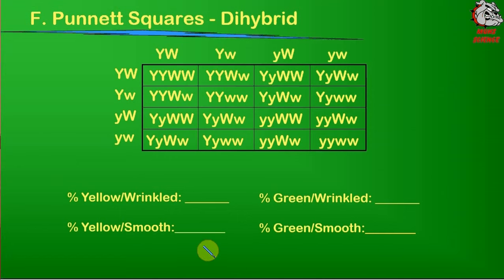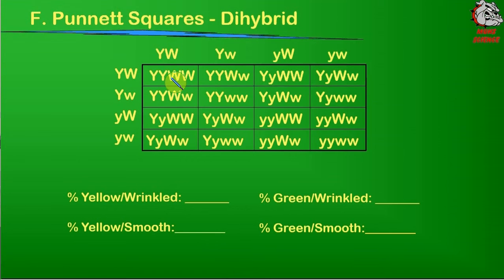As we go through these, what we next have to do is look at the percentages. We have to be able to look at the genotypes and discover which ones are yellow and wrinkled, yellow and smooth, green and wrinkled, and green and smooth. So for each one of these, let's take a look at the genotype and find out the phenotype.